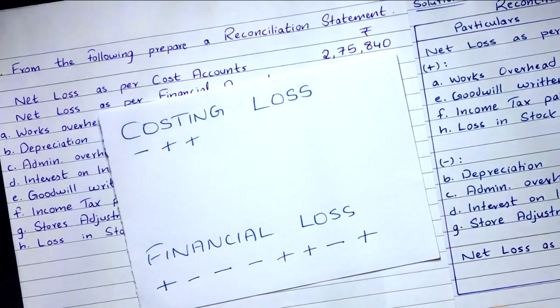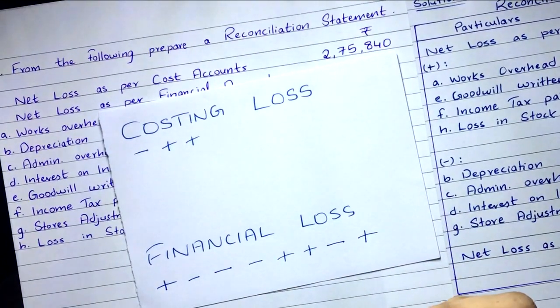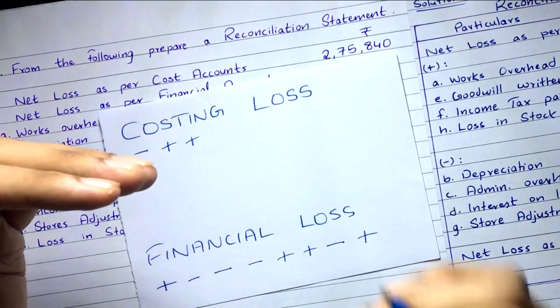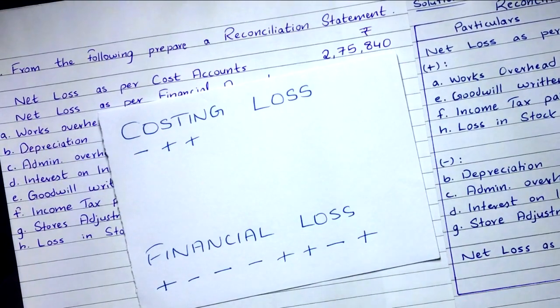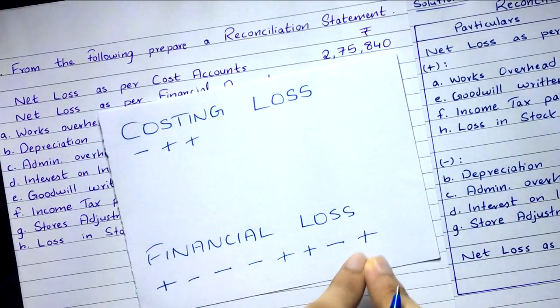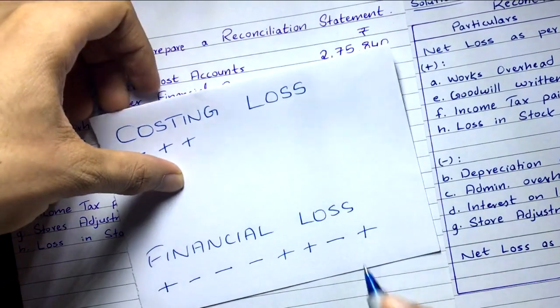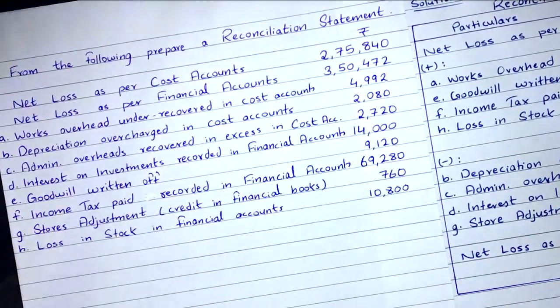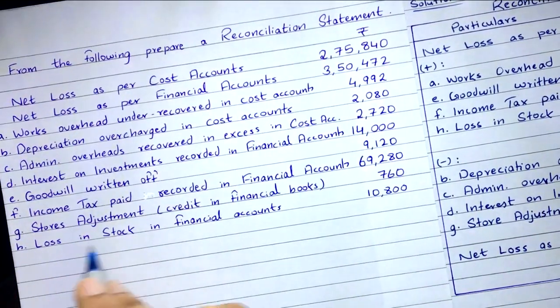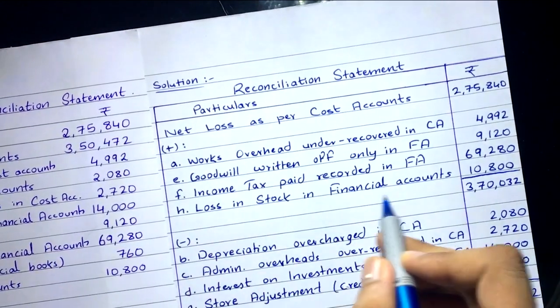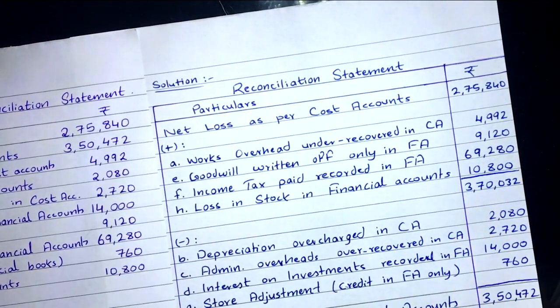If expense is recorded in financial accounts, then loss would be more — that is the plus. So here the impact is plus, and you have to add this transaction. Loss in stock in financial accounts: 10,800. That's all the transactions done.